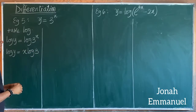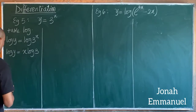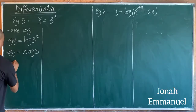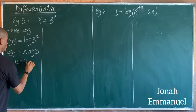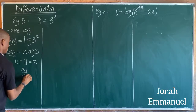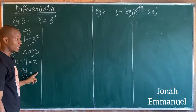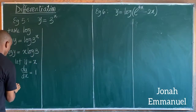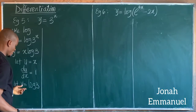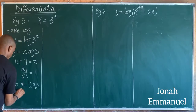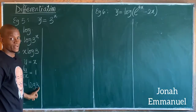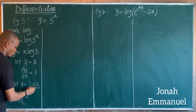At this point we use implicit differentiation combined with the product rule. For the right-hand side, let u equal x, so du/dx equals one. Let v equal log 3. Differentiating v with respect to x — notice there is no x term here, so log 3 is a constant.